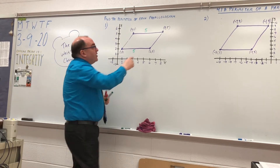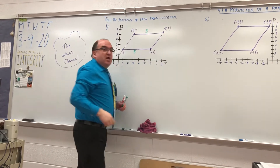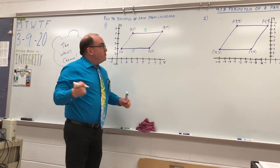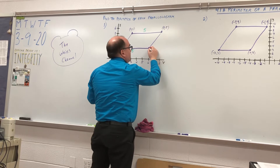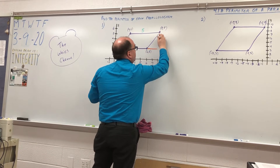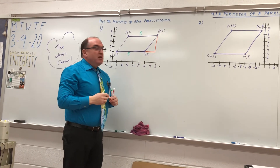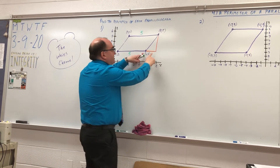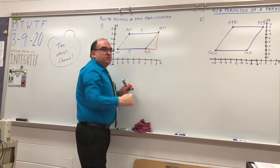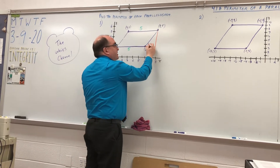Now, how do we find the distance from this point to this point? Do you remember last week I made you make a right triangle? Remember the right triangle I made you make? Just for this distance right here. And what was this length? This is 6 and this is 8. The length right here — this is 2, right?